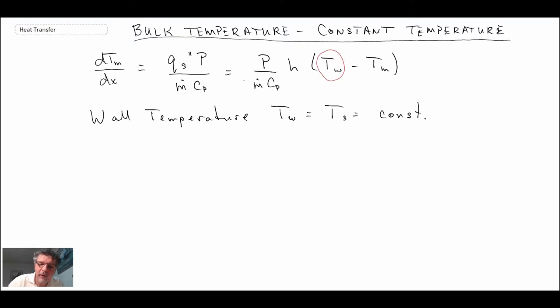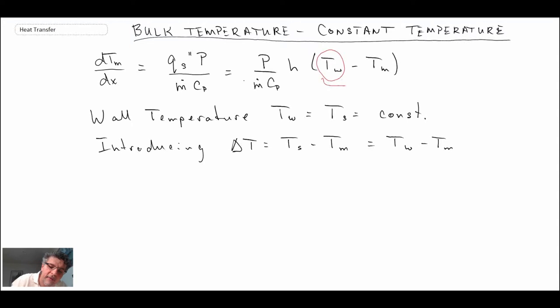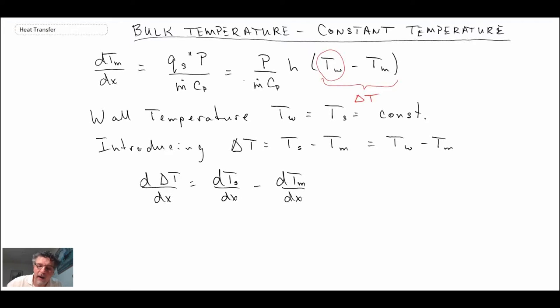In order to work with this differential equation, we're going to introduce a new variable delta T, and that will enable it to become a homogeneous differential equation. We're taking the term in brackets and replacing it with this new term delta T. We know that the wall temperature is constant and therefore cannot change with x, so the left side of the equation becomes minus d(delta T)/dx.